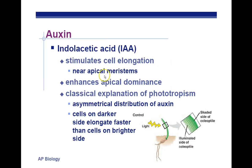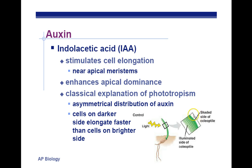That chemical was discovered to be auxin, also called indoleacetic acid (IAA). Auxin stimulates cell elongation near the apical meristems — near the tips — and enhances apical dominance, meaning the plant does more primary growth than secondary growth if the tips are present. If you cut off the tips, there's no more apical dominance and you get lots of sideways growth. The classical explanation of phototropism: light hits one side of the plant, and auxin at the tip is sent to the opposite side. On that opposite side, auxin — through the signal transduction pathway — causes that side to grow longer. As the side opposite the light grows longer, it bends the plant toward the light. That's how plants do phototropism.